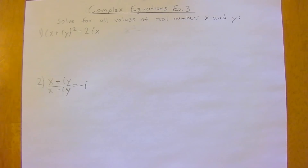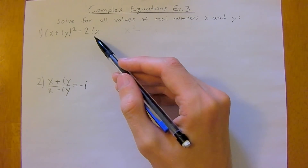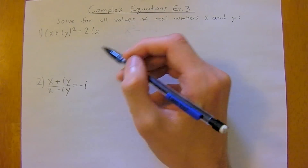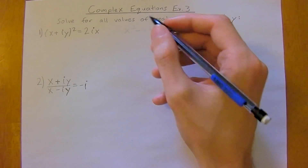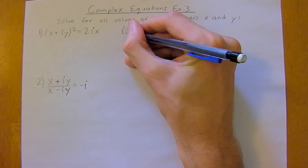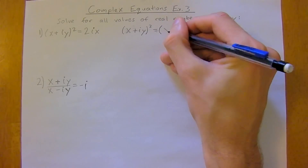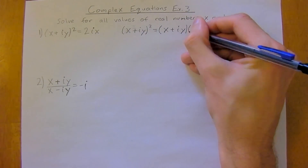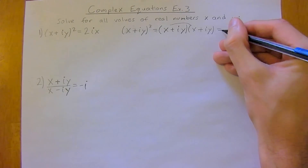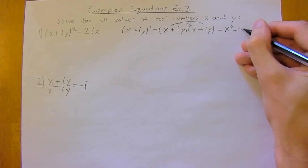We've got a few more examples just to get you used to this. You may recall that this is very similar to the complex equations example one that we did, except we've tagged an X on the right side of the equation. The first thing we're going to do is the exact same as in the first example: we're going to FOIL out the left side. IY squared equals X plus IY times X plus IY, so X times X is X squared, X times IY is plus IXY.